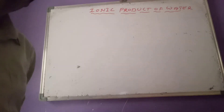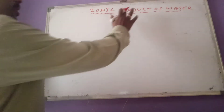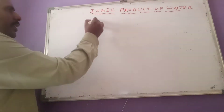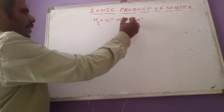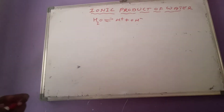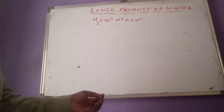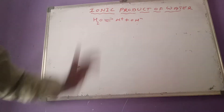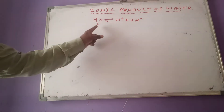Hello to everyone. In this video, let us discuss the ionic product of water and the important questions regarding this topic. First, we know that water undergoes a little bit of ionization, meaning it contains both H+ and OH- ions, but only in a small concentration. So H2O undergoes ionization to give H+ and OH- ions. This is called ionization of water.